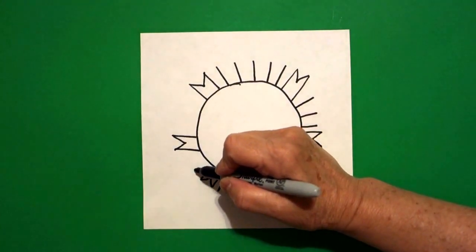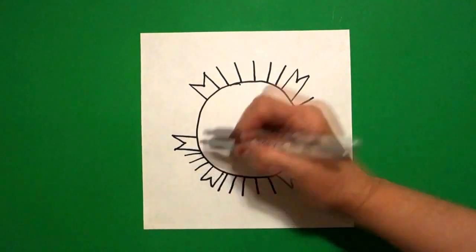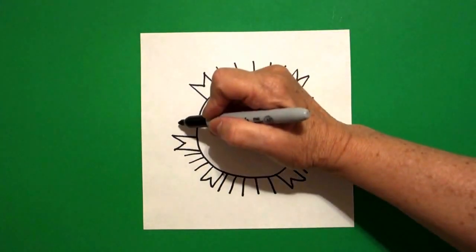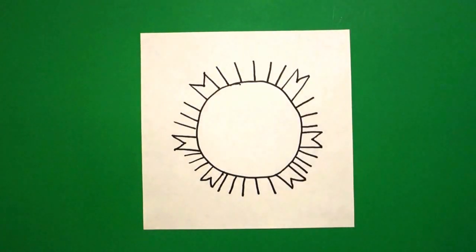And on the left I'm now going to go up and draw one, two, three straight lines. Jump over, one, two, three straight lines.